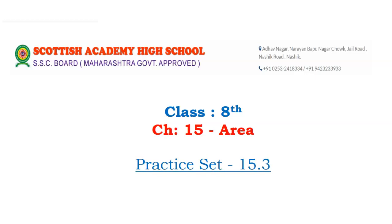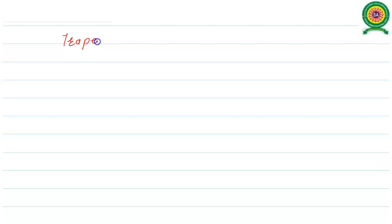Hello everyone. In this lecture we are going to discuss Class 8th topic, Chapter 15: Area, Practice Set 15.3. Before going to Practice Set 15.3, we are going to discuss firstly what is meant by the trapezium and how to evaluate its area. Once any quadrilateral has one pair of opposite sides parallel, it is called a trapezium.